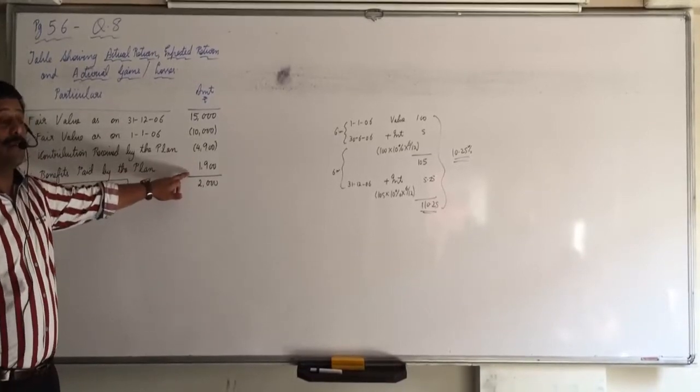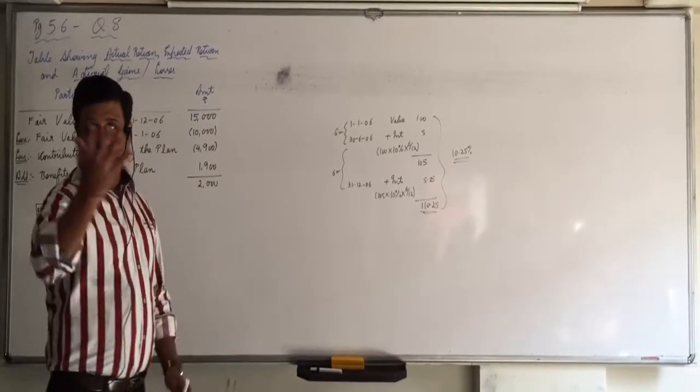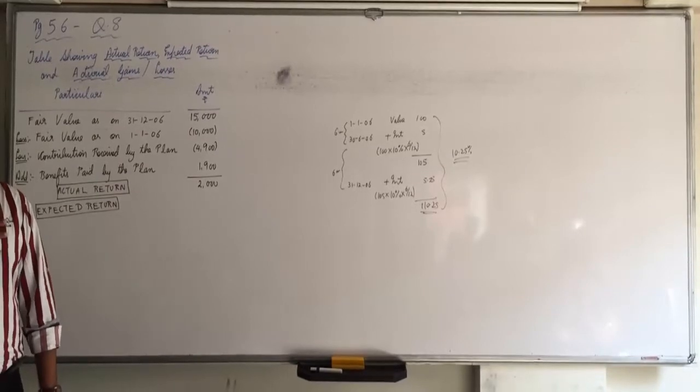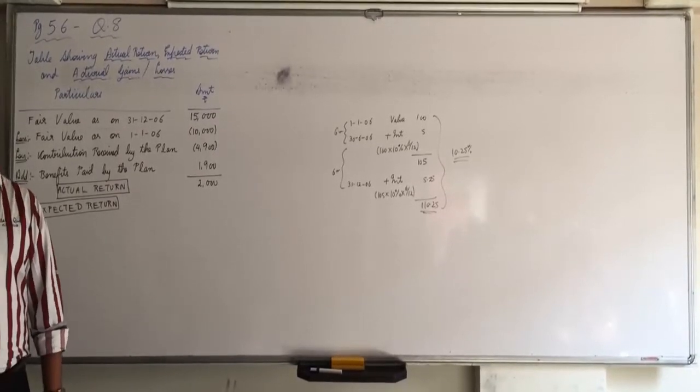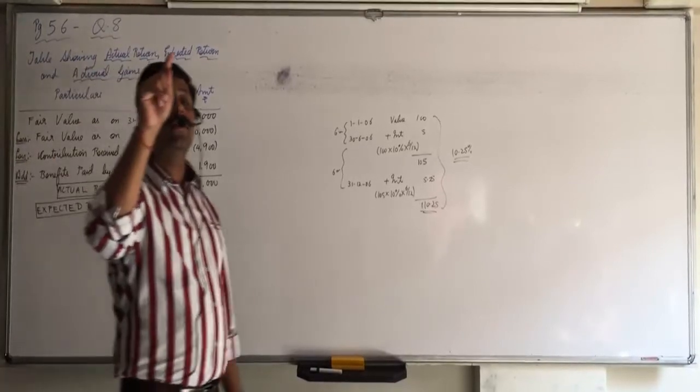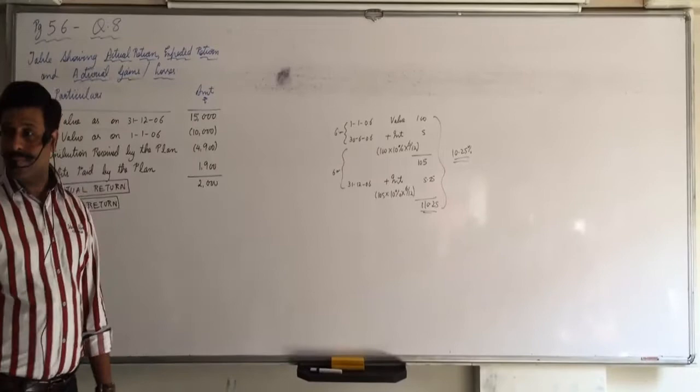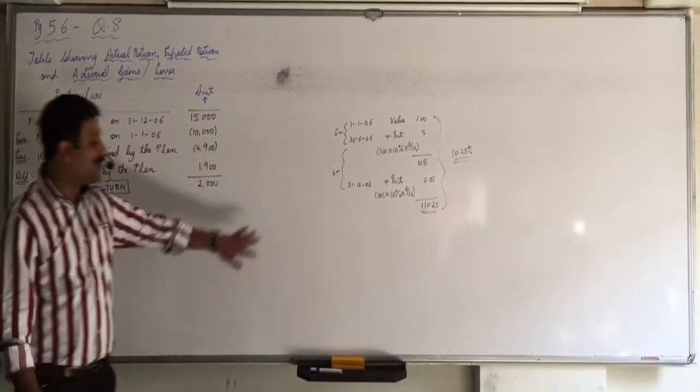So can I say net investment is 3000 only. We are receiving interest of 1900 and we are investing 4900, means from our pocket we are investing only 3000. On that 3000, because we have invested on 30th June, we will receive interest for 6 months only. 10.25% for 6 months. But actually it should be counted 10% only for 6 months.